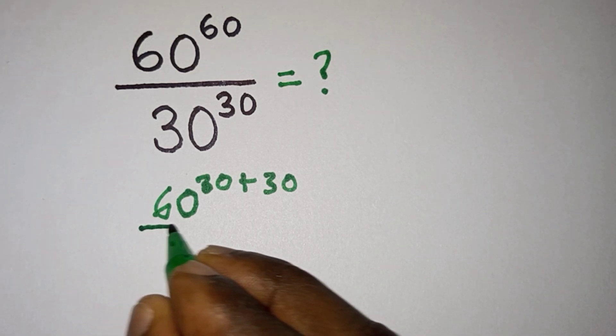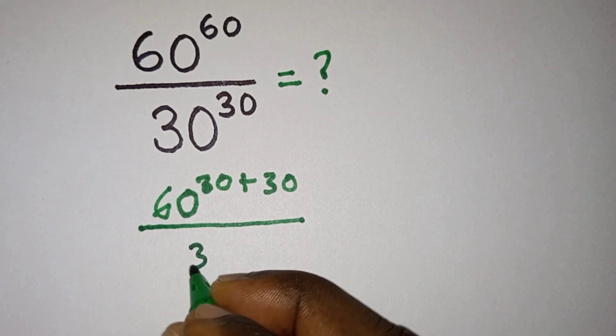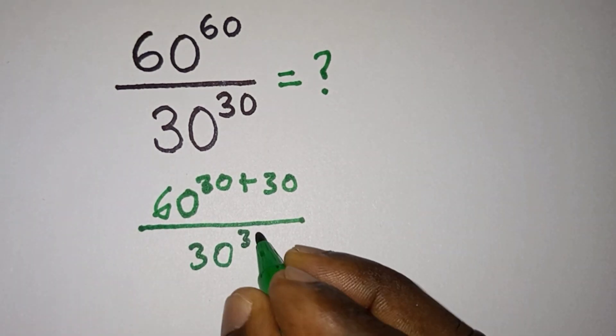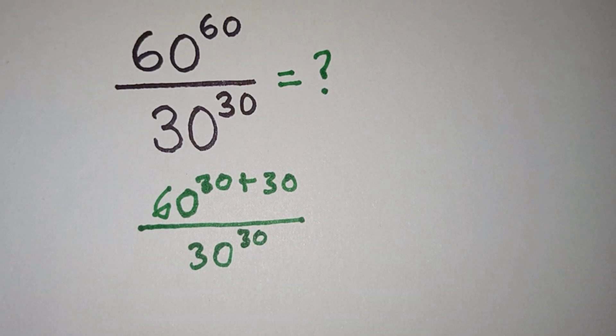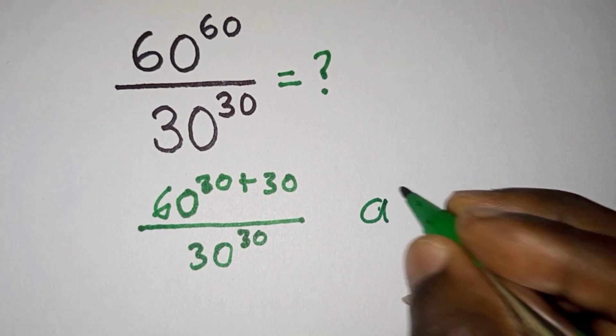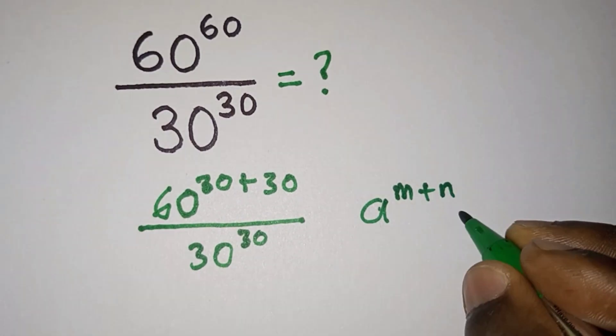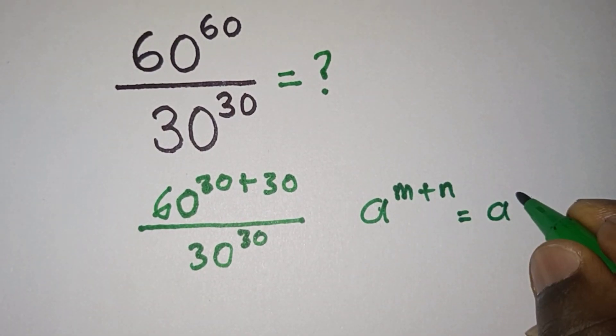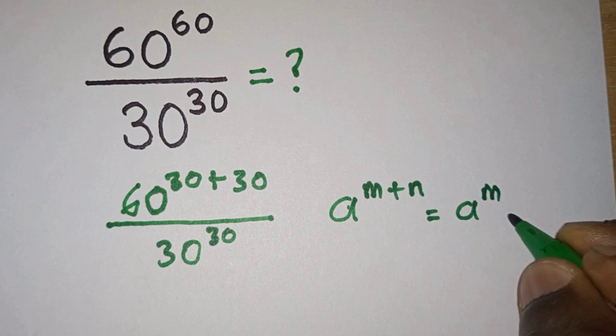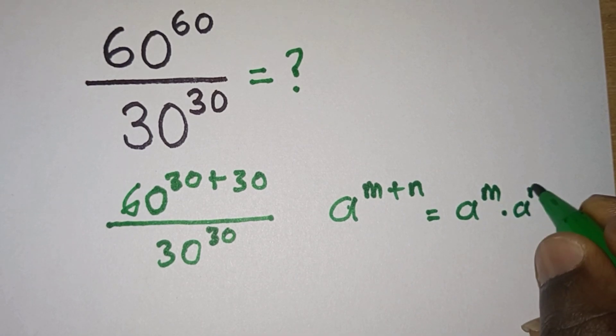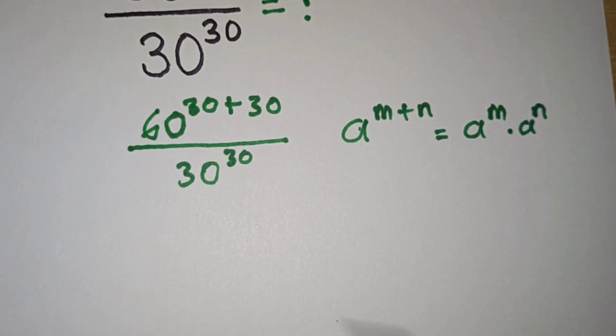Now let's recall that a to the power m plus n is the same as a to the power m times a to the power n. So from here we can write this as 60 to the power 30 times 60 to the power 30, then all divided by 30 to the power 30.